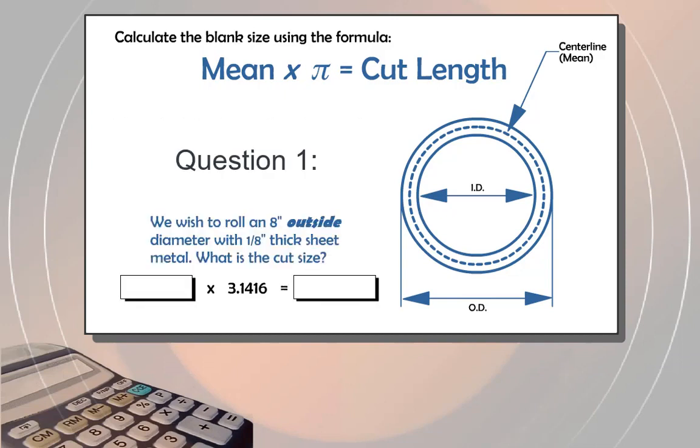Question 1. Say we wish to roll an 8-inch outside diameter with 1⅛-inch thick sheet metal. What is the cut size? The mean is 7.875 and the answer is 24.740.